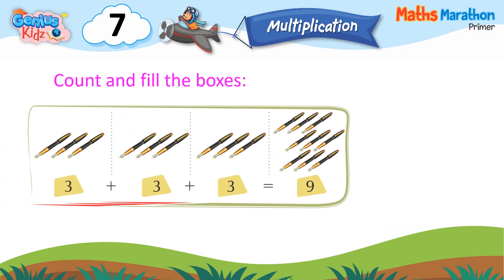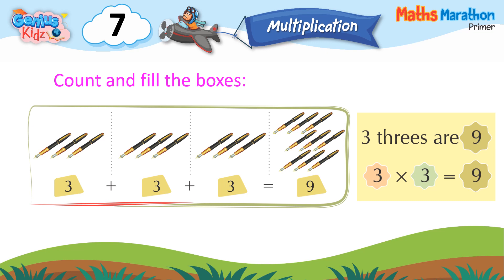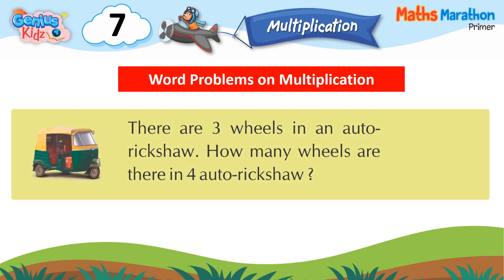3 plus 3 plus 3 is equal to 9. 3 threes are 9. 3 multiply 3 is equal to 9. Word Problems on Multiplication: There are 3 wheels in an auto rickshaw. How many wheels are there in 4 auto rickshaws? 2 multiply 4 is equal to 12.